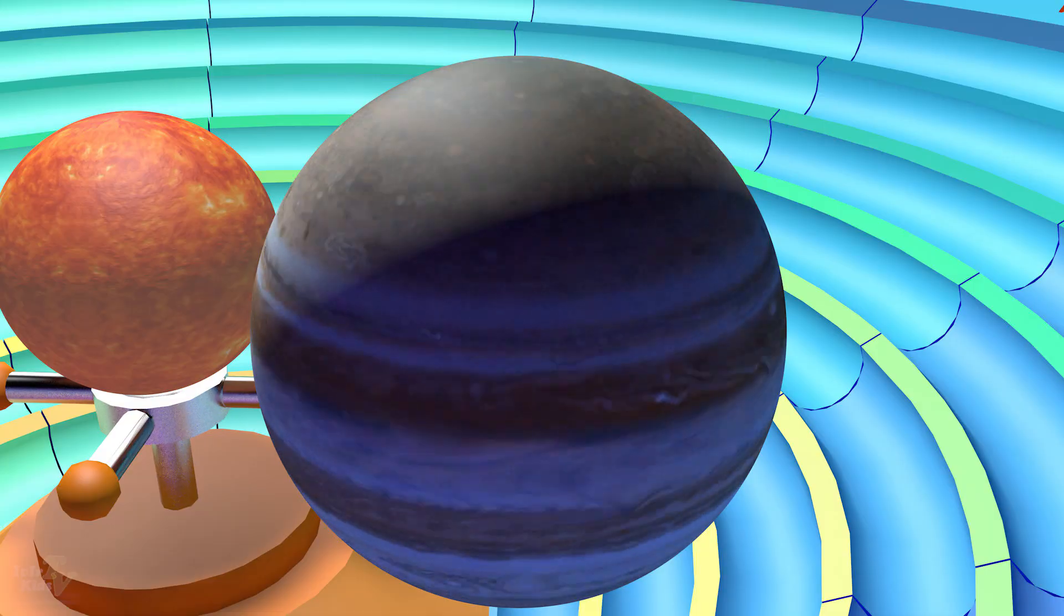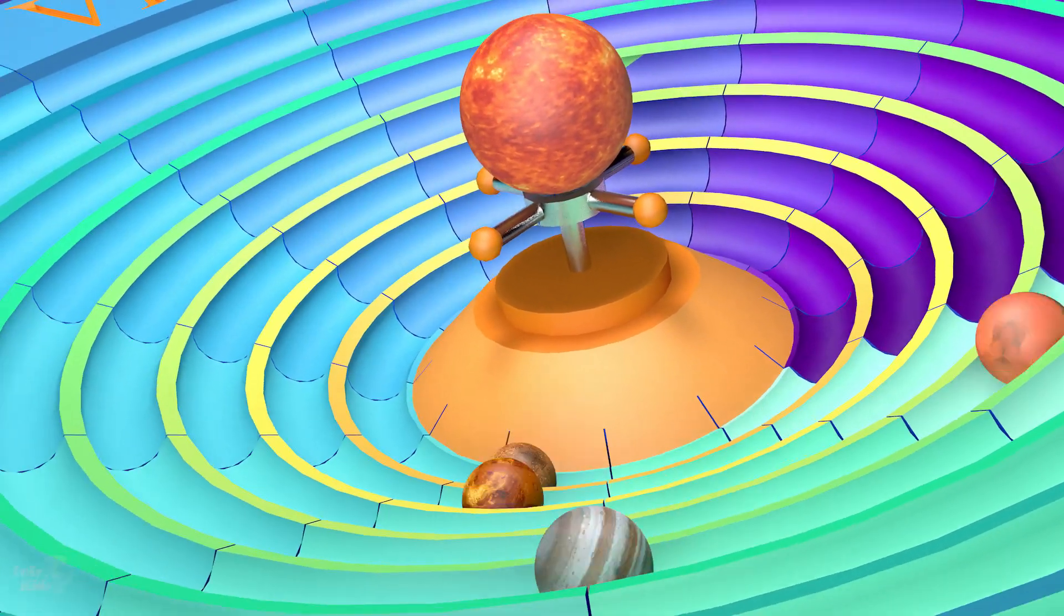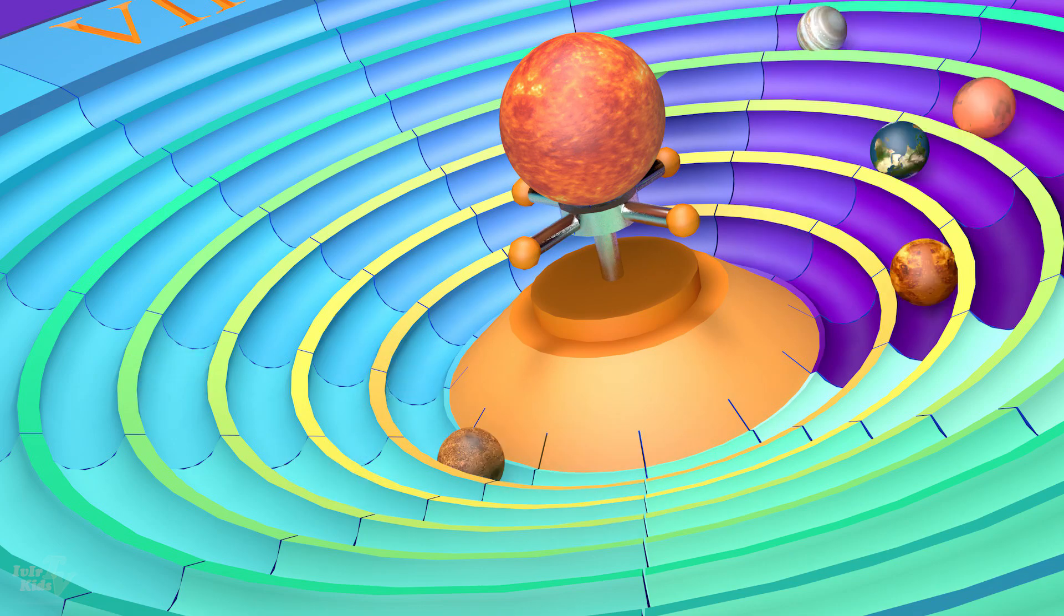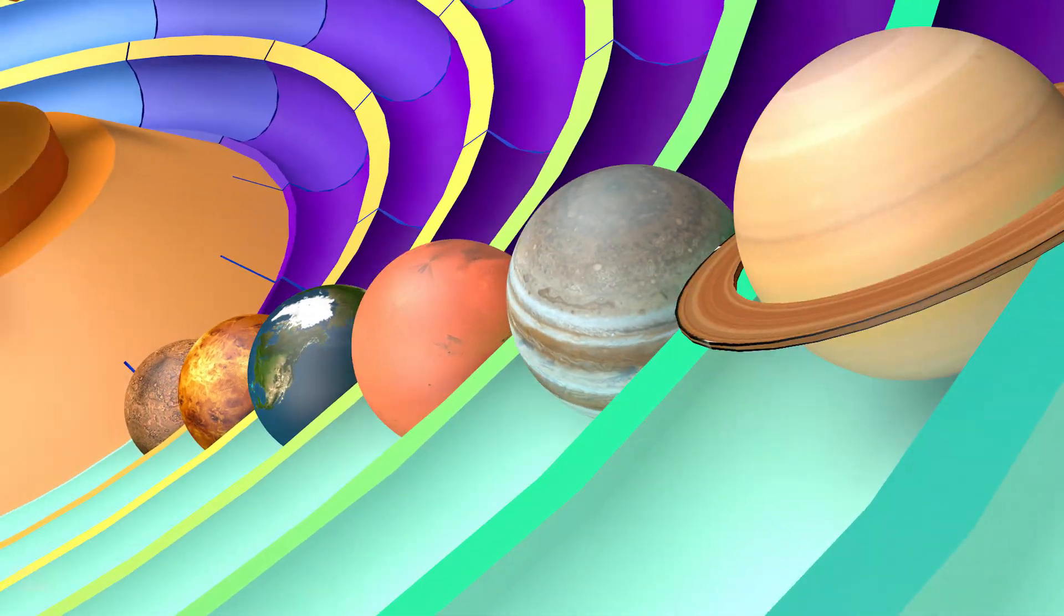If you think the Martian year is big, then look at Jupiter. Its revolution around the sun will be 11.9 Earth years. And this is not the limit. Saturn takes 29.4 years to complete its journey.